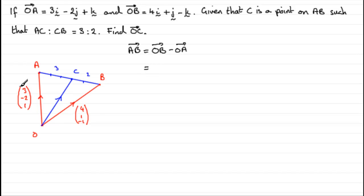OB, what's OB? It's the vector 4, 1, minus 1. So if we write this down as a column vector, 4, 1, minus 1, then we need to subtract the other vector OA, which is 3, minus 2, 1. And if we work this out, what we'll get is 1, 3, minus 2.